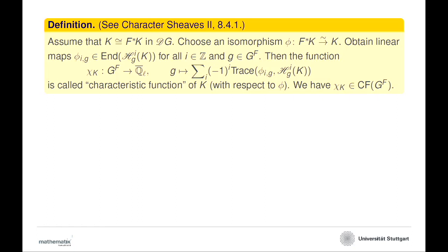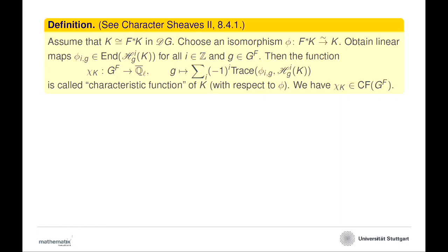A tricky point: I always insisted on choosing an isomorphism. For an irreducible complex like a character sheave, by something like Schur's lemma, phi is unique up to a nonzero scalar. So these functions are only well defined up to nonzero scalars. There is a real issue here — when you really work this out and want to find these scalars, you have to fix this isomorphism carefully.